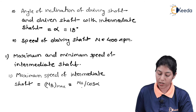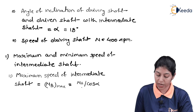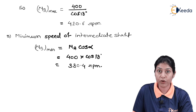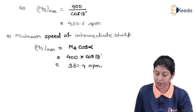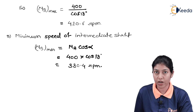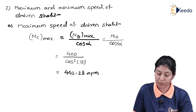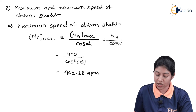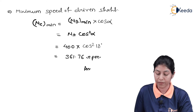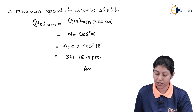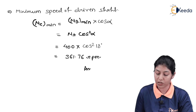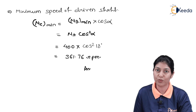So here we have all the results: the maximum speed of the intermediate shaft is 420.6 RPM, the minimum speed of the intermediate shaft is 380.4 RPM, the maximum speed of the driven shaft is 442.28 RPM, and the minimum speed of the driven shaft is 361.76 RPM. This is the complete solution of this numerical. Thank you so much.